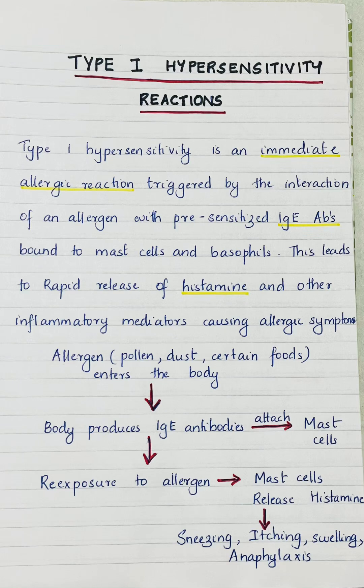Hello everyone. Welcome to the channel Microbial World. In this video, we will be studying about type 1 hypersensitivity reactions in detail. Type 1 hypersensitivity is an immediate allergic reaction triggered by the interaction of an allergen with presensitized IgE antibodies bound to mast cells and basophils. This leads to rapid release of histamine and other inflammatory mediators causing allergic symptoms.